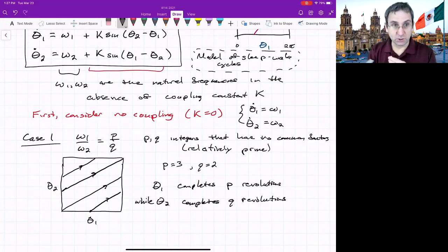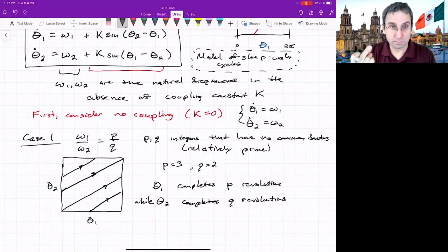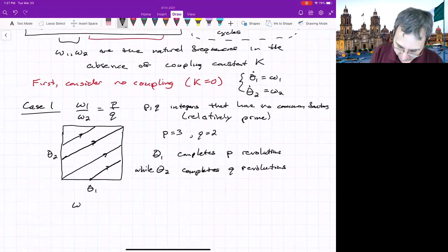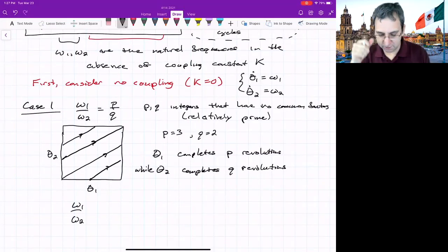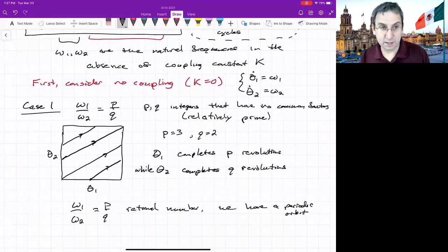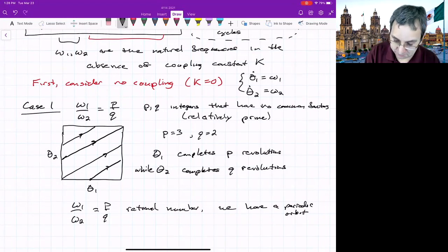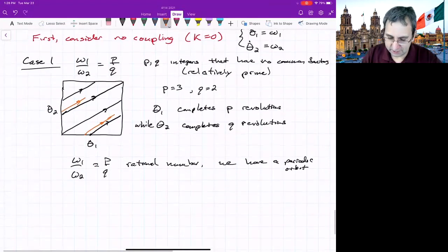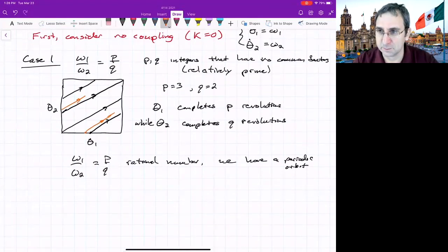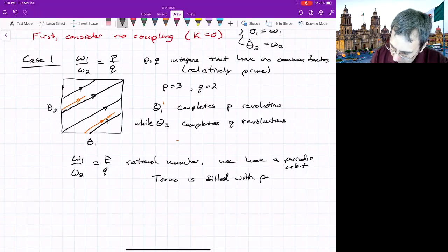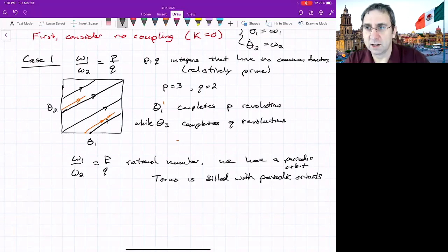So if you notice what happens here, theta one completes p revolutions. That means p revolutions in the theta one direction, while theta two completes q revolutions. And that's independent of what initial condition I started with. So this trajectory actually comes back onto itself. So when omega one over omega two is a rational number, we have a periodic orbit. It's not a limit cycle, because it's not isolated. Anywhere you start, you're going to have the same thing, you'll have a periodic orbit, it'll just be maybe shifted a little bit. The torus has a bunch of periodic orbits. In fact, it's filled with periodic orbits, but they might look kind of weird.